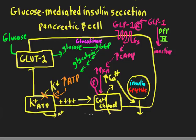Now let's start with the pancreatic beta cell. I always like to think about the vesicle first with the contents inside. We know from neurotransmitter release from nerve terminals that in order to release contents from vesicles we need a rise in intracellular calcium. That calcium is going to come from the outside and enter the beta cell through voltage-gated calcium channels, in a very similar way to neurotransmitter release in nerve terminals. These voltage-gated channels are opened in response to depolarization.